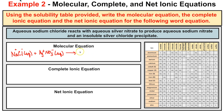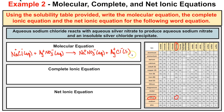Sodium nitrate is NaNO₃ aqueous (Na⁺ and NO₃⁻). Silver chloride is AgCl solid — silver is Ag⁺ and chloride is Cl⁻, and checking the solubility table, silver chloride is indeed insoluble in water, confirming it as the precipitate. The molecular equation is: NaCl(aq) + AgNO₃(aq) → NaNO₃(aq) + AgCl(s). Checking the balance, it is already balanced, so this is our molecular equation.